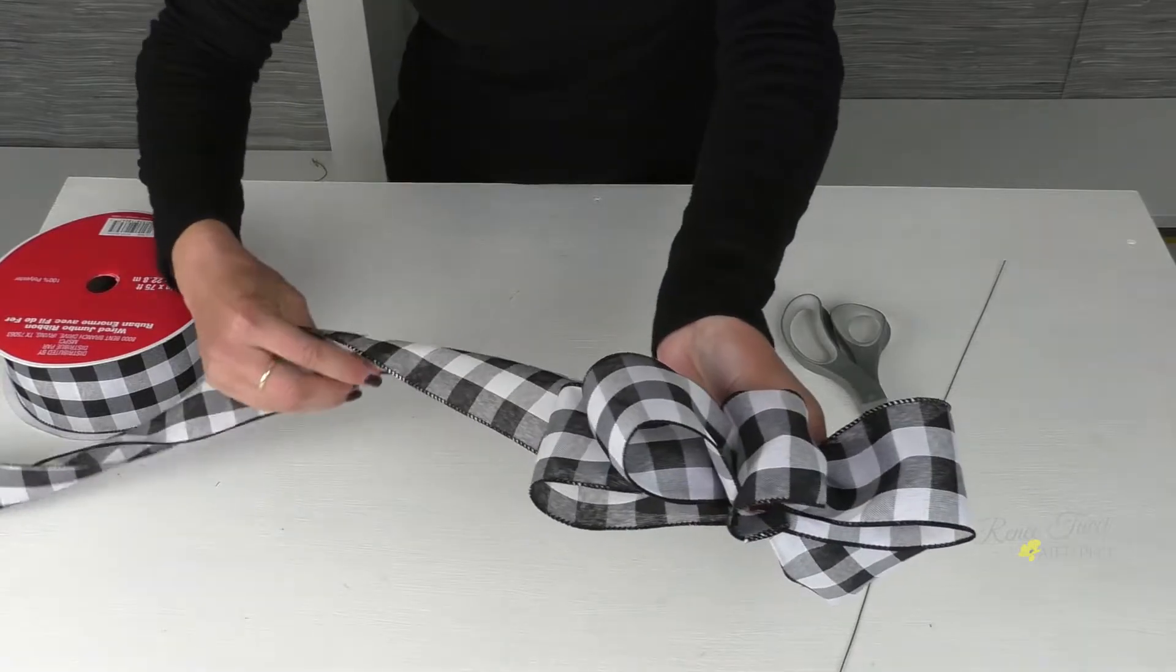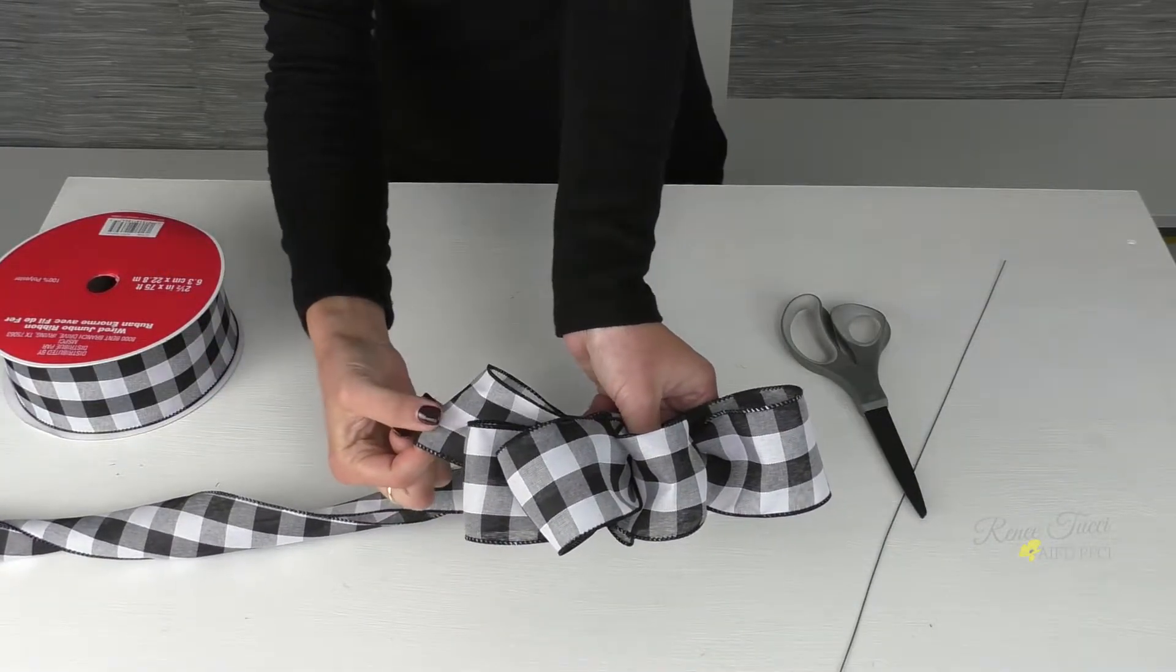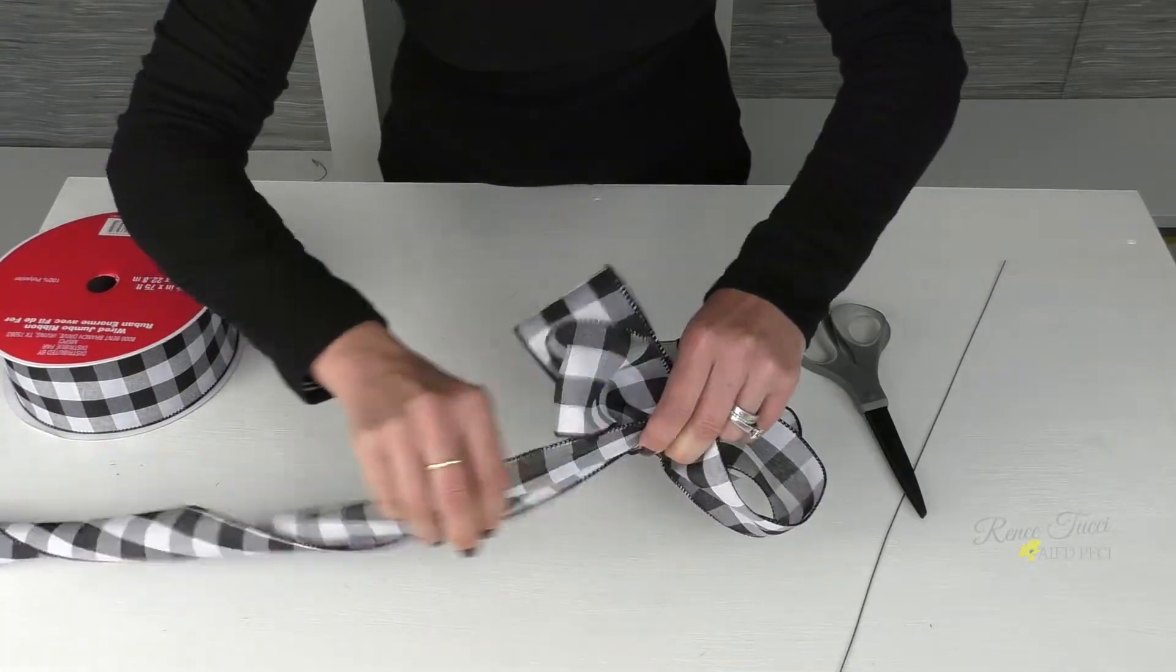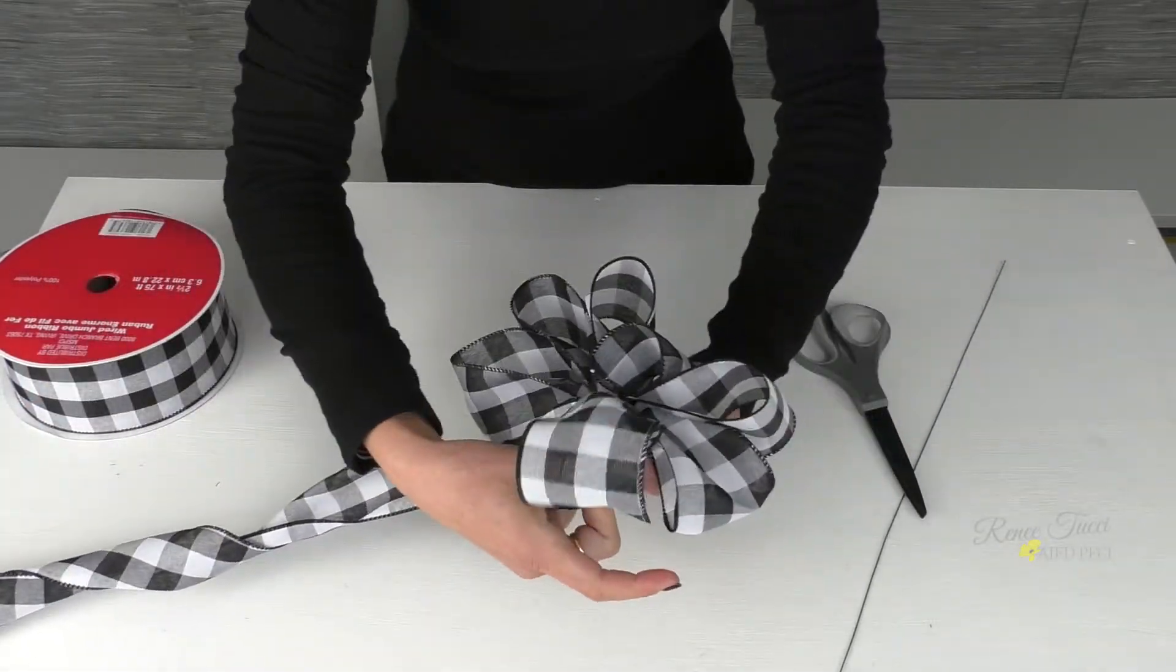Let's take our ribbon and create a third loop. Again, slightly longer than our second and our first loops. Back to the center. Twist. And repeat on the other side.